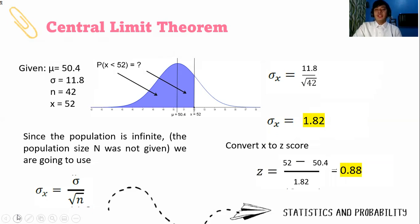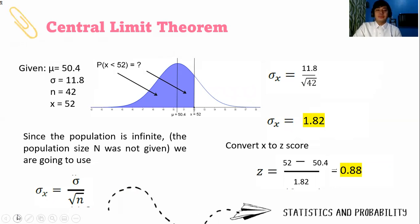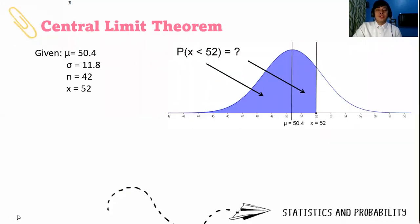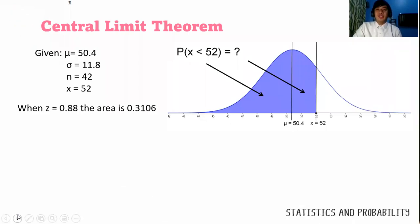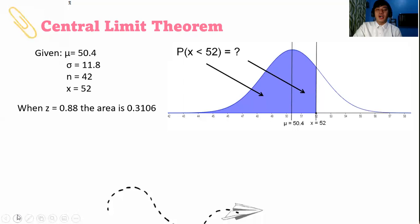We will look now at z which equals 0.88 on the z-table. Get your z-table and look at 0.8, then correspond it to 0.08. When z is 0.88, what did you see? Correct, the area is 0.3106. Very good.